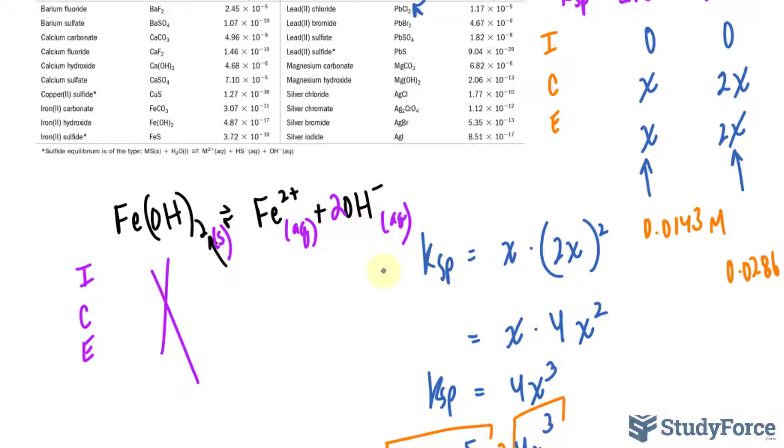What this tells us is that initially, there are no Fe2+ or OH ions. So I'll write down zero and zero. For the change, I'll represent this as X, and since it's a one-to-two ratio, this will be 2X. And to find E, we add I plus C, and that's always the case. So I'll add zero plus X, and zero plus 2X is 2X.